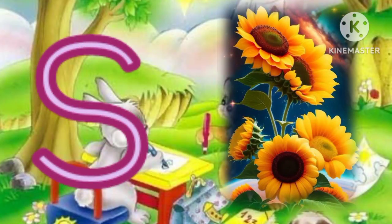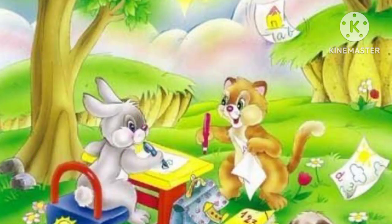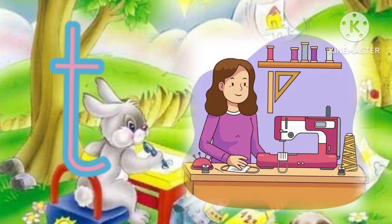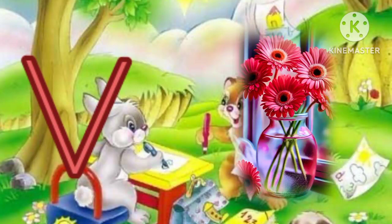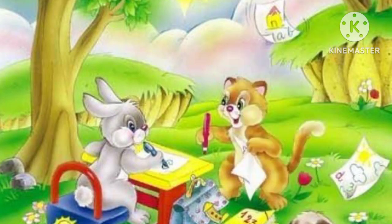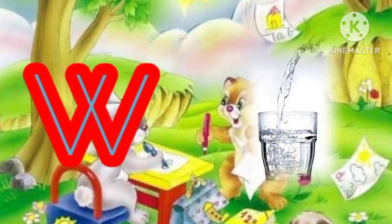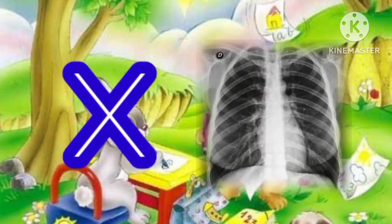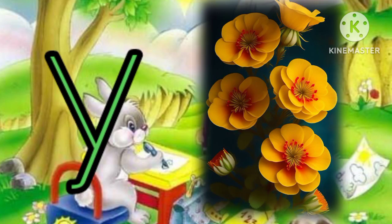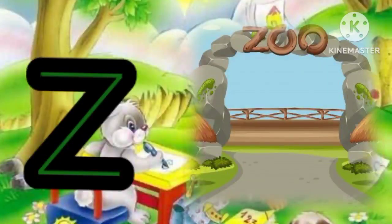S for sun, T for tailor, U for umbrella, V for vase, W for water, X for x-ray, Y for yellow, Z for zoom.